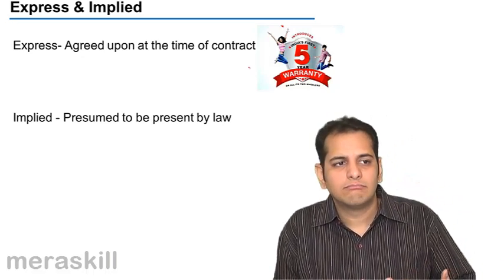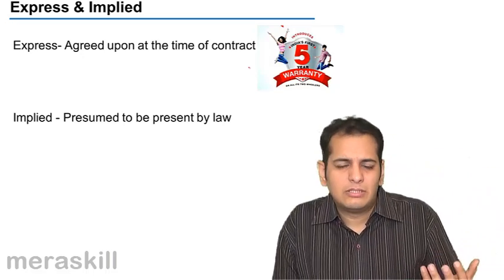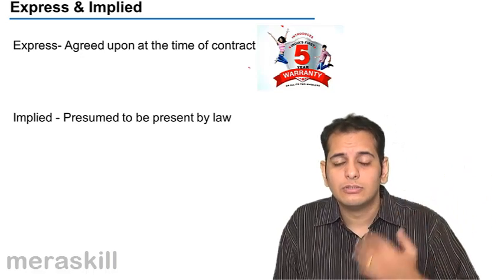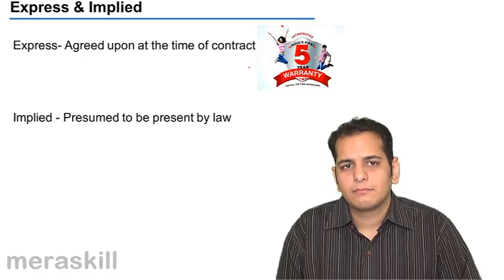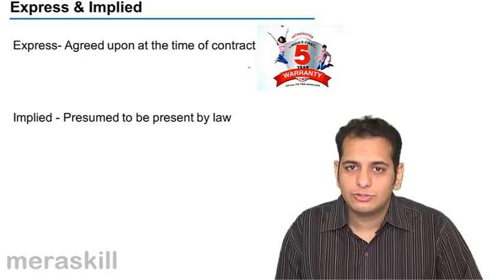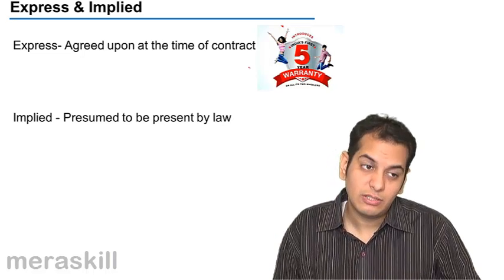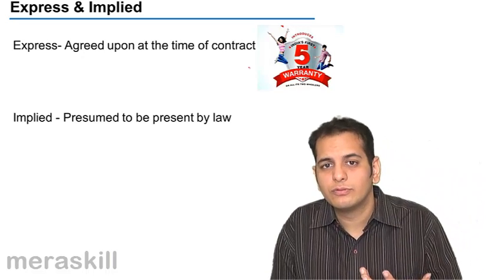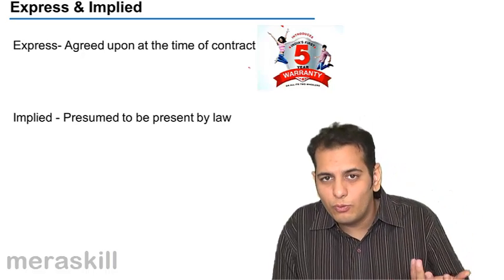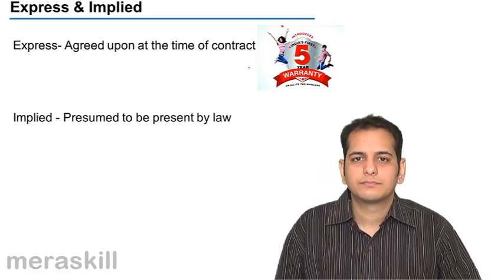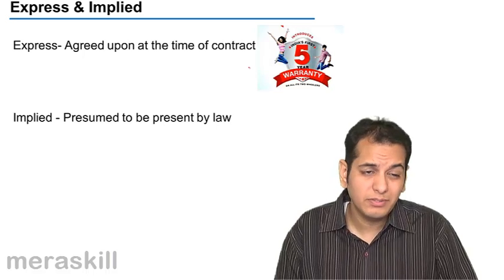Express conditions and warranties would be decided by the buyer and the seller. For example, the buyer tells the seller that the car should run at a top speed of 250 kilometers per hour — that is an express condition. Another express condition: the car should have a sunroof. The seller tells him the car also has a folding seat — that becomes an express warranty. If the seat does not fold, there is a breach of warranty. Any number of conditions and warranties may be expressed — that depends upon the buyer and seller solely.